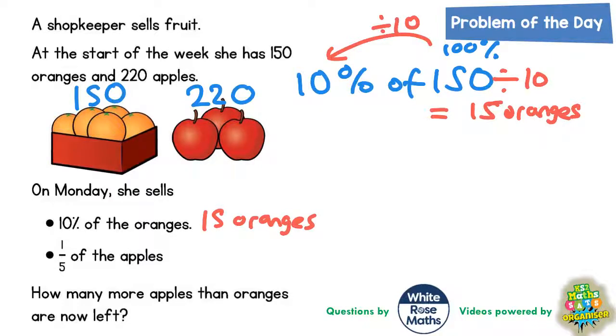But we need to know how many she's got left because later on in the question it talks about having oranges and apples left. So if she sells 15, then that means we are losing 15 from the 150 that she started with. So 150 take away 15.